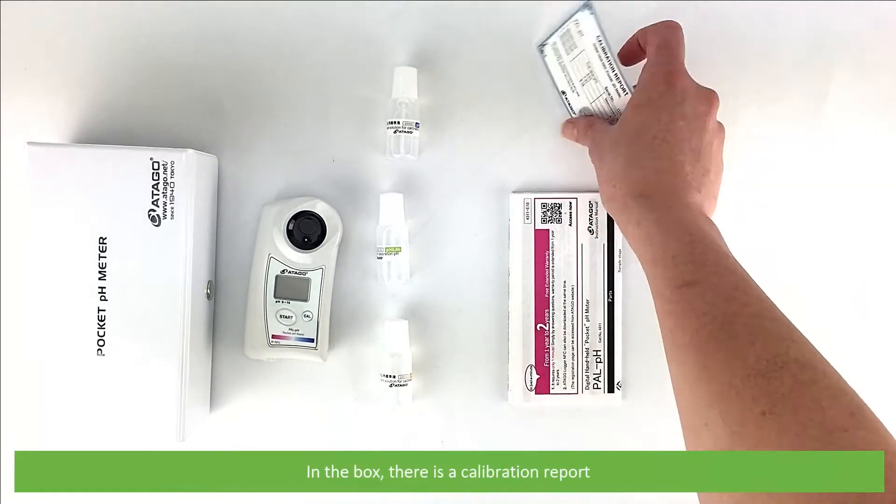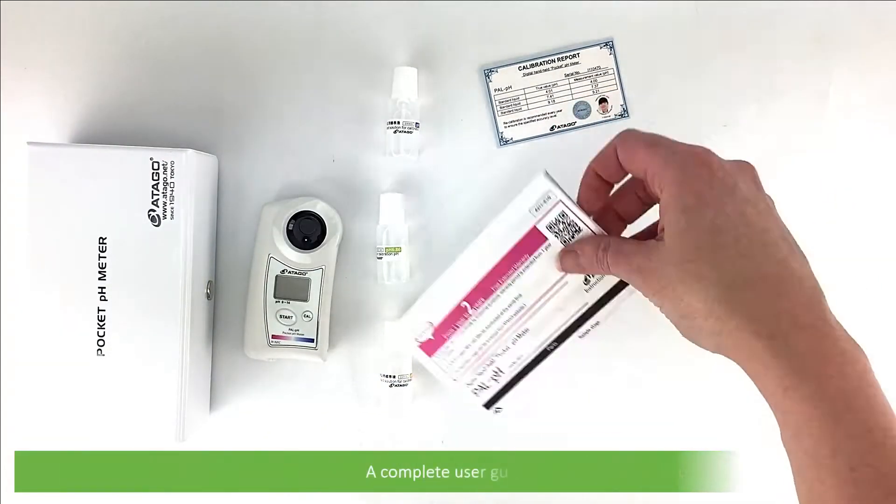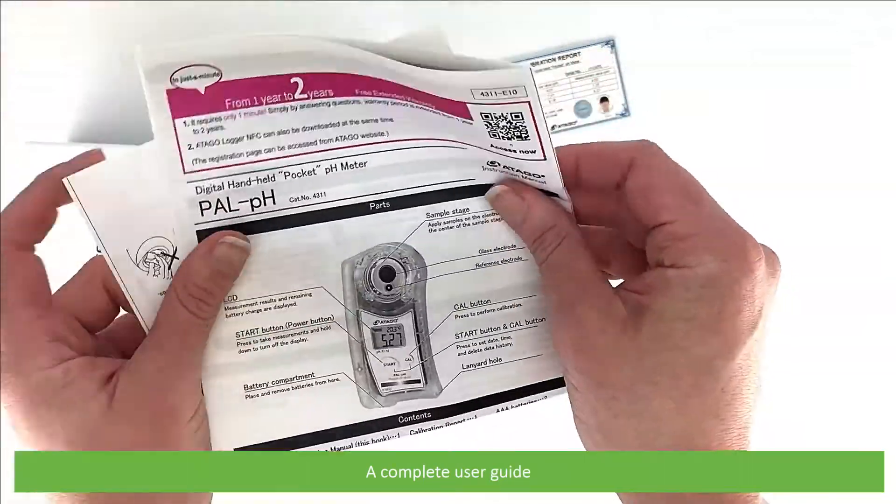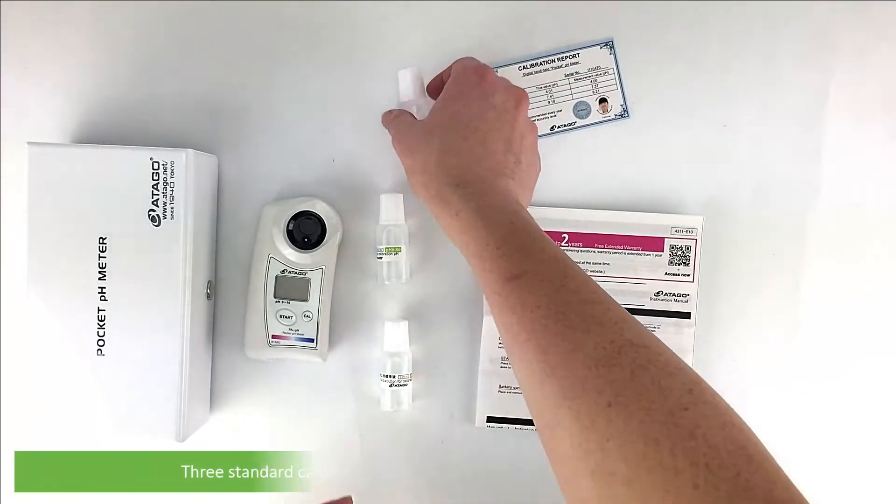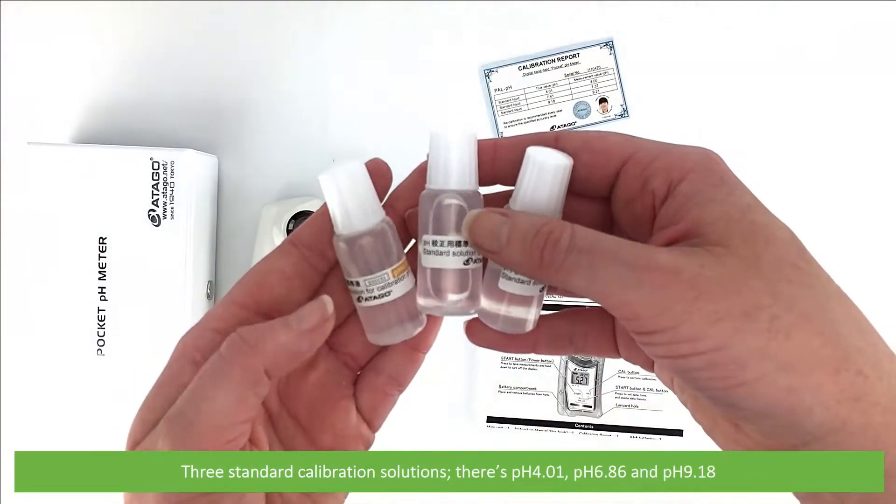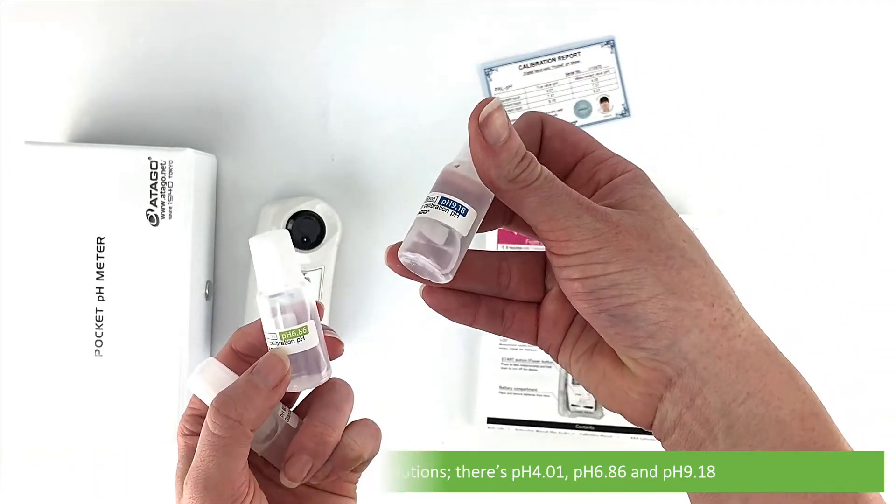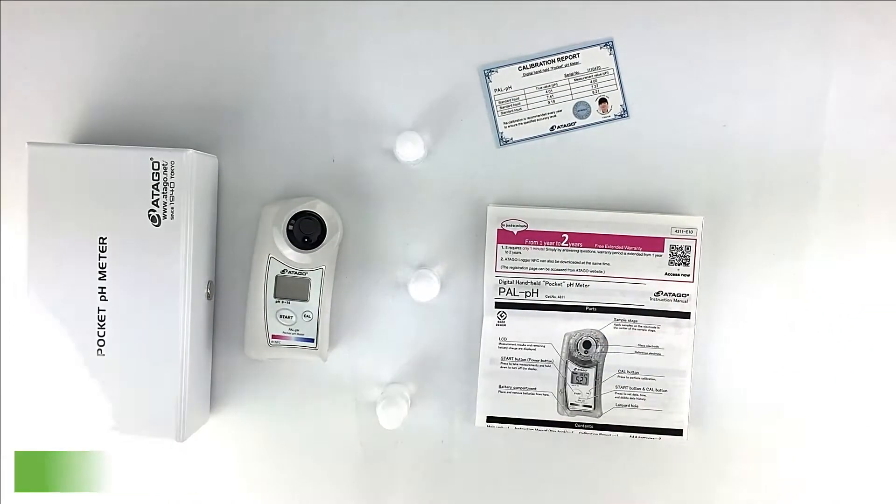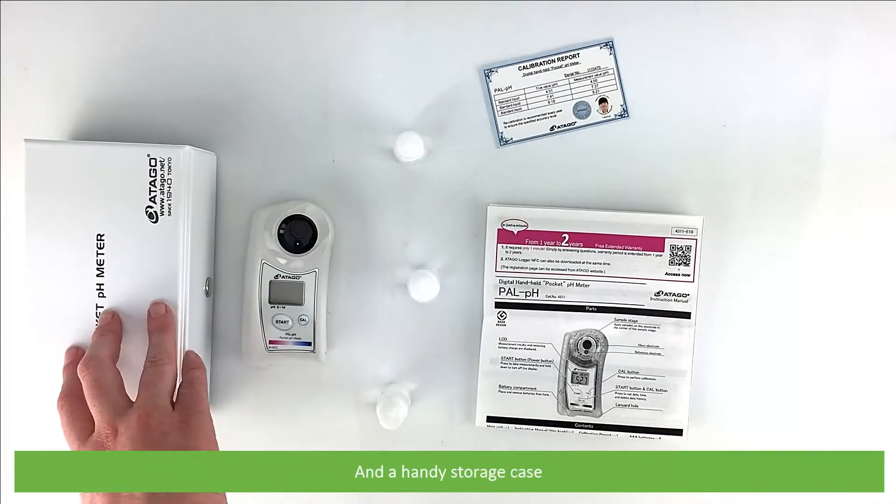In the box there is a calibration report, a complete user guide, three standard calibration solutions: pH 4.01, pH 6.86 and pH 9.18, the pH meter, and a handy storage case.